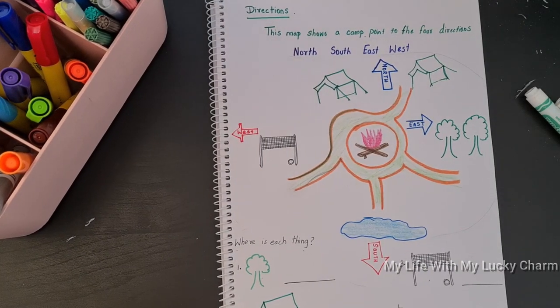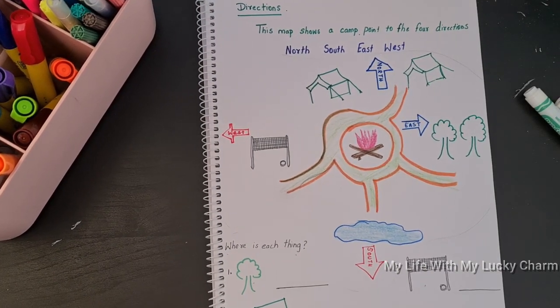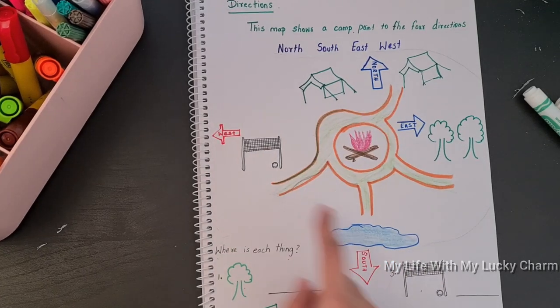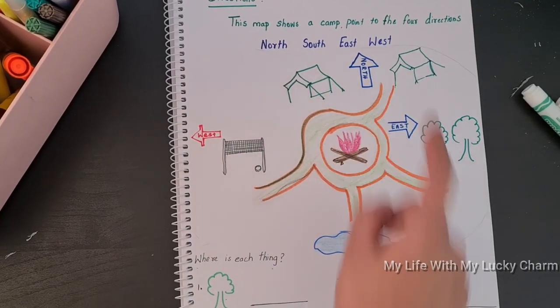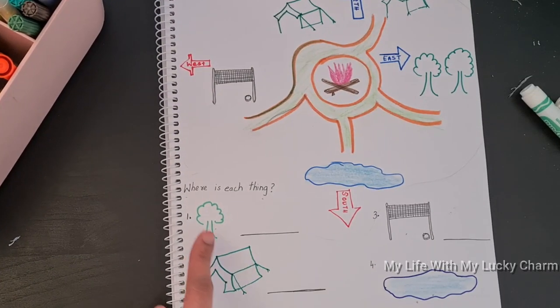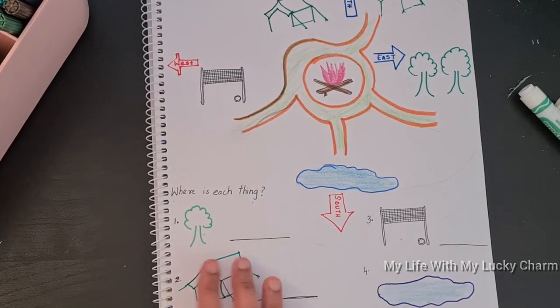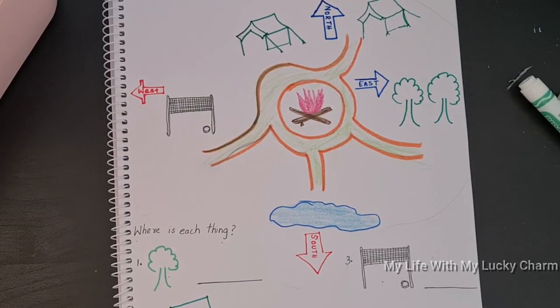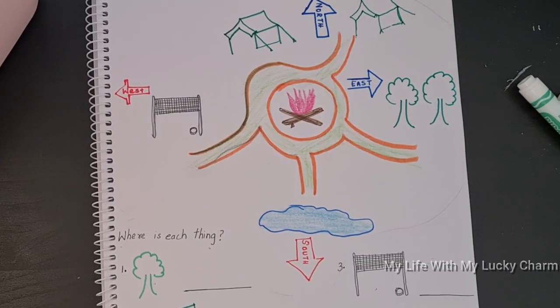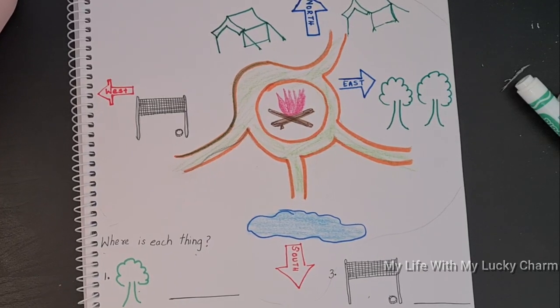So the next one is a simple direction based activity. Here I have given a simple map with directions like north, south, east, and west, and he needs to find out where these objects are in the map. So it's a simple activity to make them understand there are four directions.